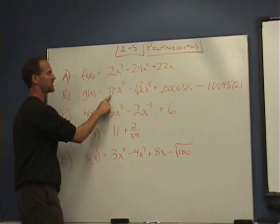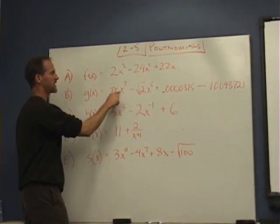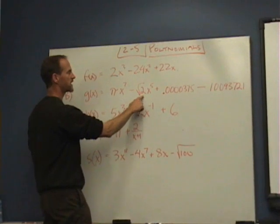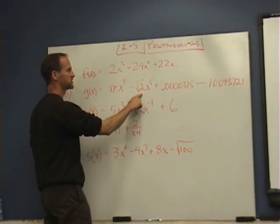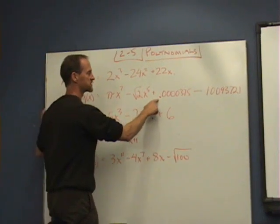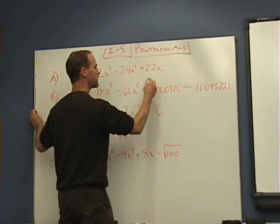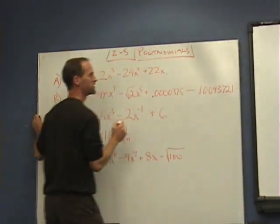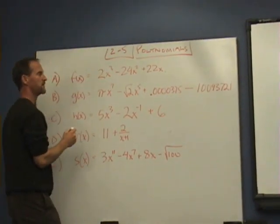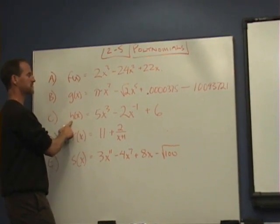The pi here is an irrational number but it's okay because it's just being multiplied by x, so that's alright. The radical 2 here is also an irrational number but it's also just being multiplied. This is a small number being subtracted by a larger number. We would actually put this in standard form by doing the subtraction, but it's still a polynomial because it can be written in polynomial form.